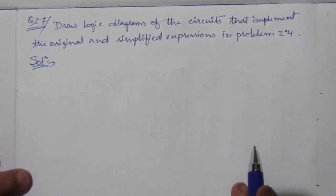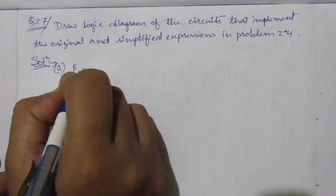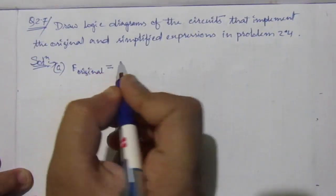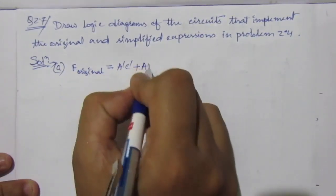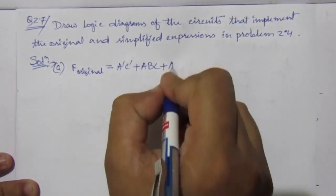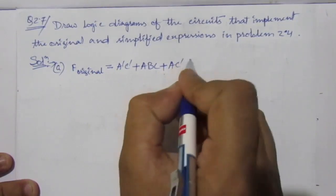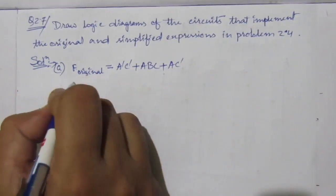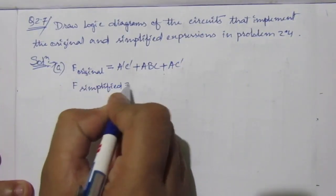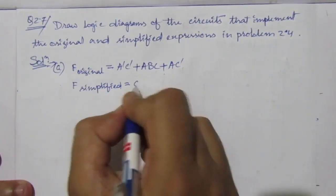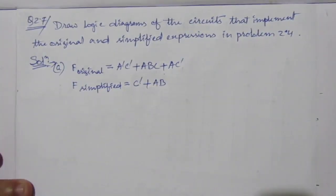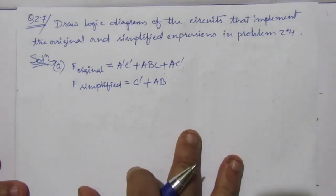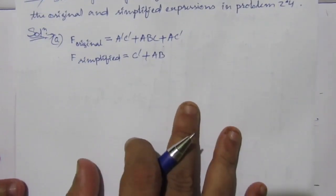The first problem is: f original equal to ā·c̄ plus a·b·c plus a·c̄. And f simplified equal to c̄ plus a·b. So the simplified expression is c̄ plus a·b. Now let us draw the logic diagram.